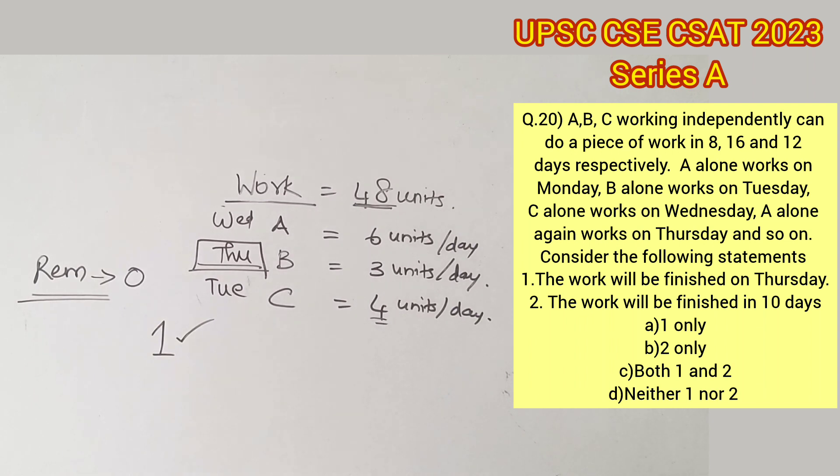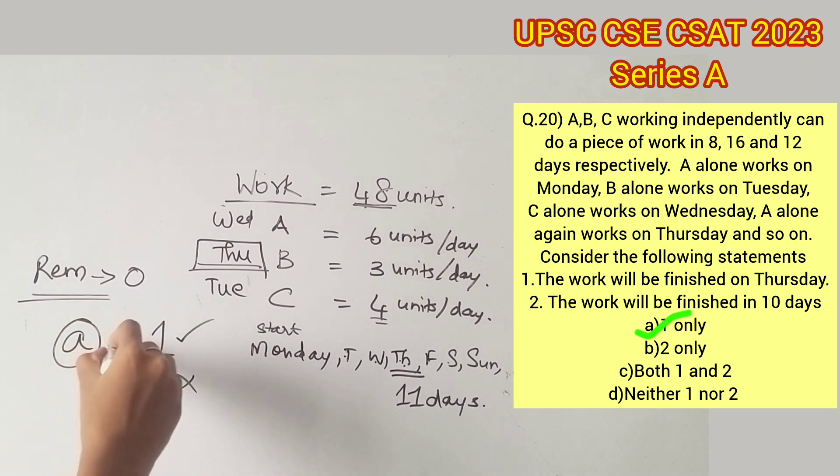So let's calculate the number of days. We know that the work was started on the previous Monday. Therefore, one week has already passed, and then the next Thursday was the end of the work, which gives us a total of 7 plus 4, that is 11 days. So statement 2 is wrong. Therefore, option A is the right answer.